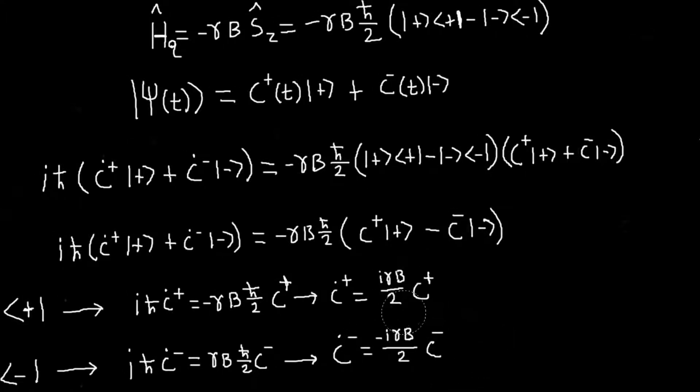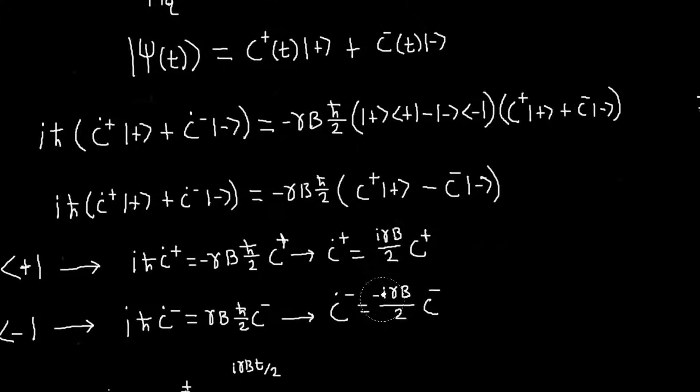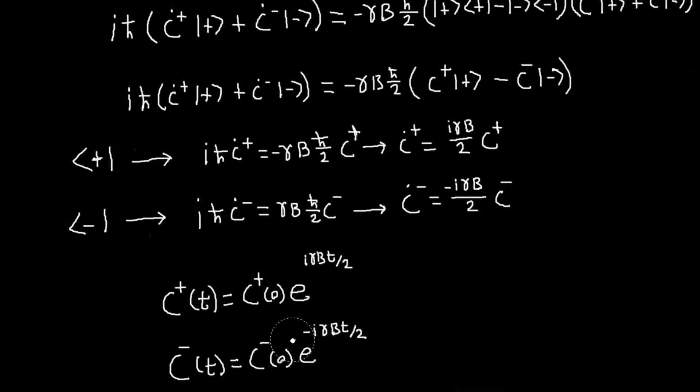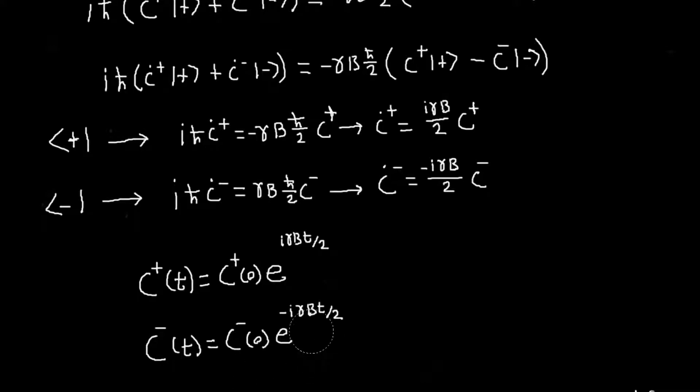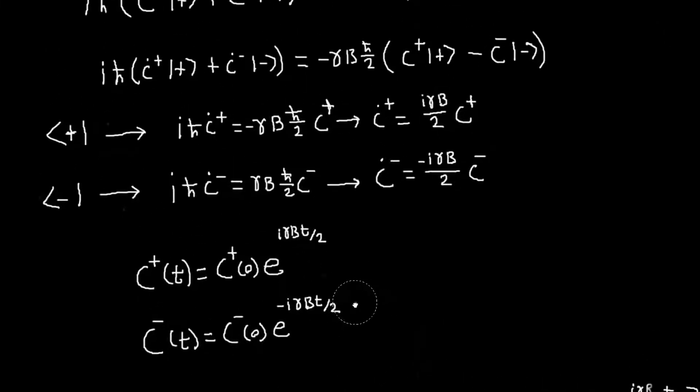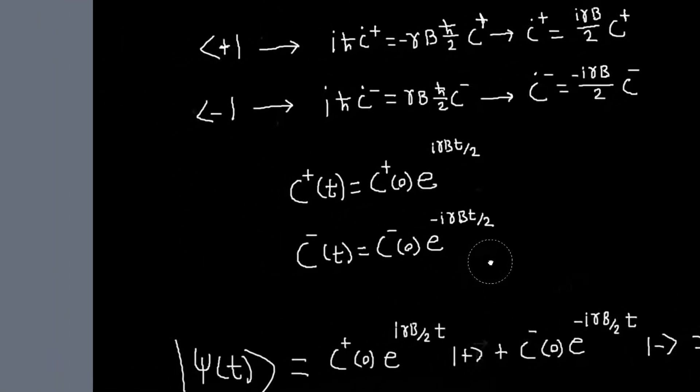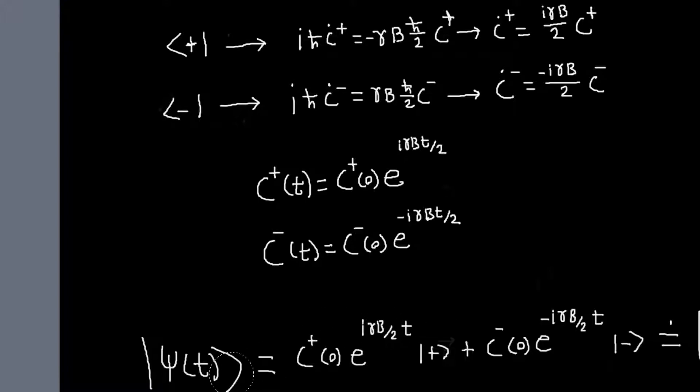And luckily, they're very easy differential equations to solve. So I'll just tell you, and you can verify if you can't solve this, that this is the solution. So we have c plus as a function of time is equal to c plus of 0, this is just the initial value at time equals 0, times this exponential factor, e to the i gamma B t over 2. And then c minus looks similar, only with a minus sign in the exponential. And so we've solved the Schrödinger equation. We have our state vector as a function of time.